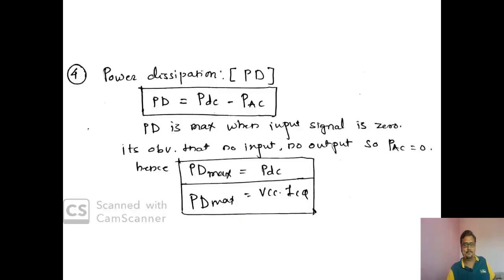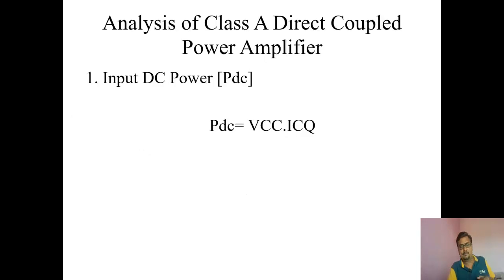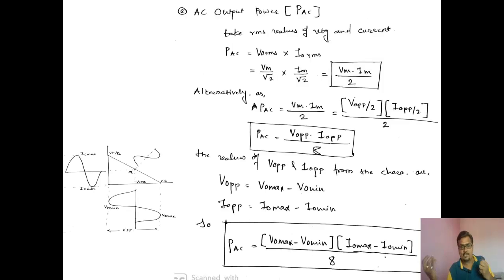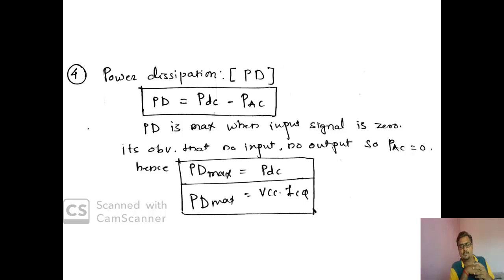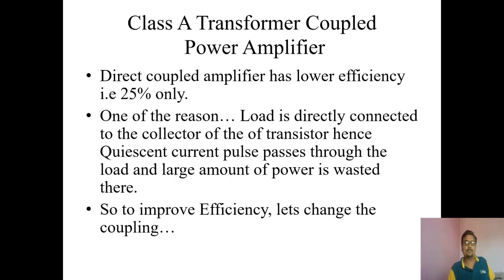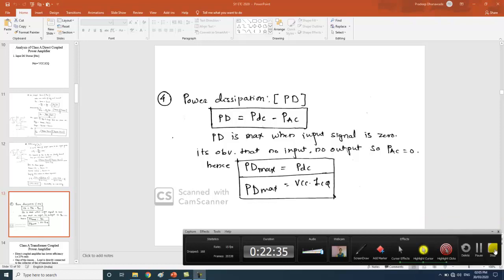That is the analysis of the direct coupled amplifier. We have seen: input power taken is VCC × ICQ; output AC power generated is Vm × Im / 2; theoretical efficiency is 25%; and power dissipation is PDC minus PAC. In the next lecture, we will start with the transformer coupled power amplifier. Thanks a lot.